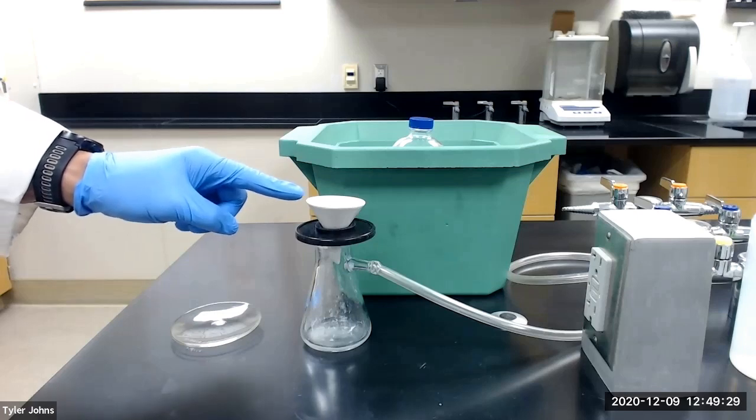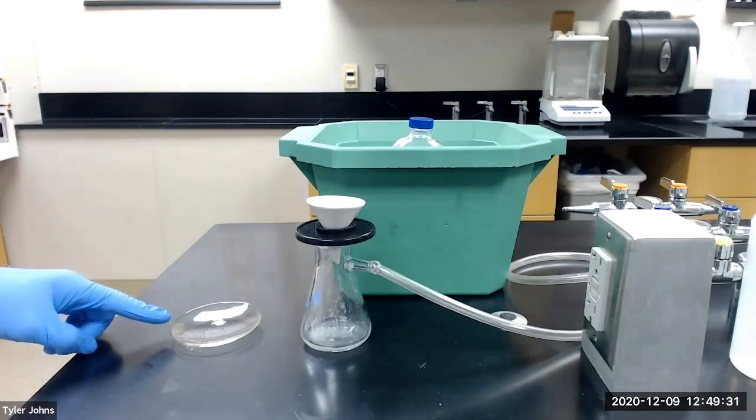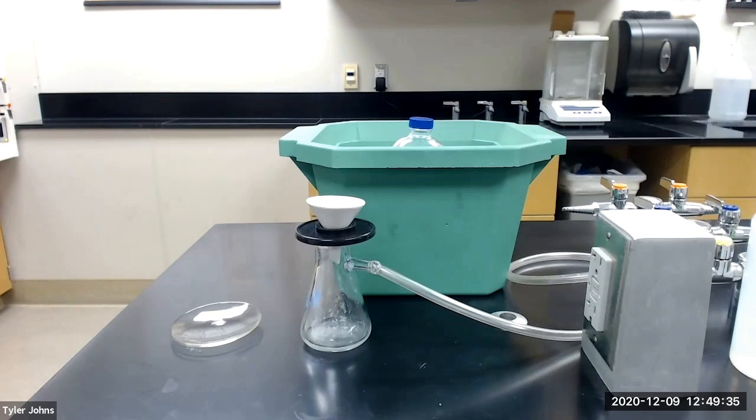We will next transfer the purified benzoin to the pre-weighed watch glass and then place it in an 80 degrees Celsius oven to dry for several minutes.